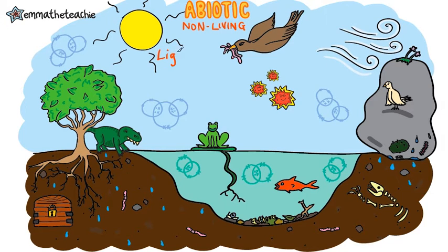First up is light intensity. Plants require light for photosynthesis, so where it is dark, plant growth is limited, which of course will affect the rest of the community.